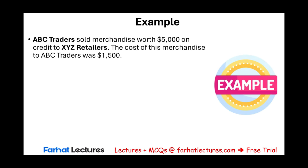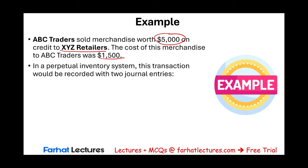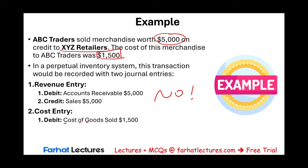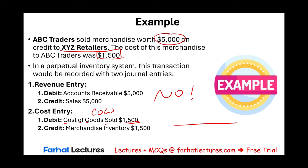ABC Traders sold merchandise worth $5,000 on credit to XYZ Retailer. The cost of the merchandise to ABC was $1,500. Using a perpetual inventory system, this transaction is recorded with two journal entries. First, the revenue entry: debit accounts receivable, credit sales for $5,000. Second, the cost entry: debit cost of goods sold $1,500, credit merchandise inventory $1,500, because we sold the inventory and must reduce it.